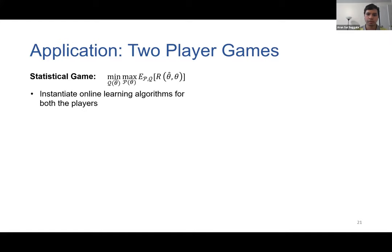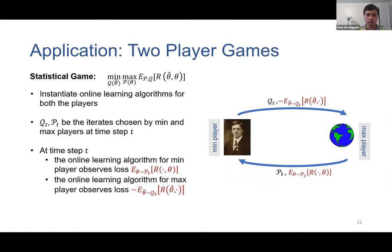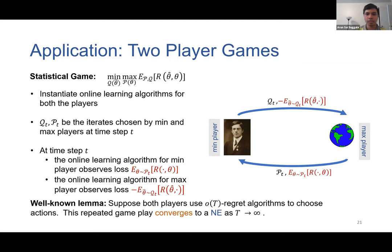We first instantiate an online learning algorithm for the min player and one for the max player. Let qt and pt be the iterates chosen by the min and the max players in iteration t. At time step t, the online learning algorithm for the min player observes a loss equal to the expected value of pt times r of theta. Similarly, the online learning algorithm of the max player observes a loss equal to negative expected value of qt times r of theta hat. If both players use vanishing regret algorithms — meaning regret is little-o of T — then this repeated gameplay converges to a Nash equilibrium of the game.